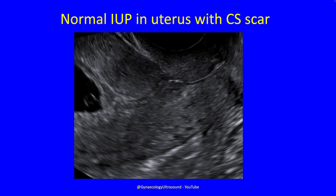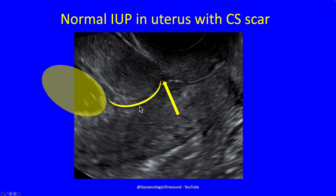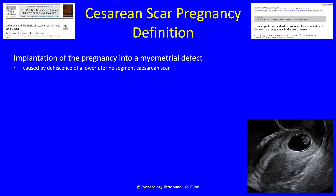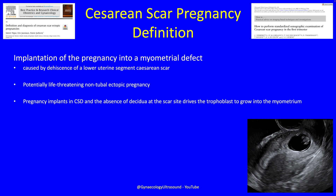So once somebody gets pregnant who's had a caesarean section, what does that look like? There is the section scar; here's the internal cervical os, and then there's a pregnancy — the pregnancy is nowhere near the scar, which is normal. But sometimes the pregnancy implants in the scar — that's called the caesarean scar pregnancy, where the pregnancy is implanted into the defect caused by dehiscence or non-healing of the section scar. It's a non-tubal ectopic pregnancy that can be life-threatening, and the trophoblast grows into the myometrium and the tissues beyond.